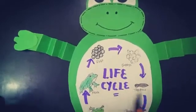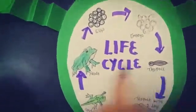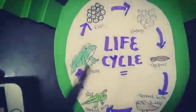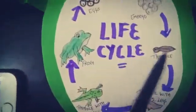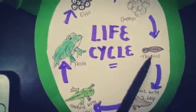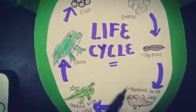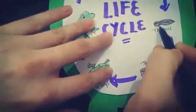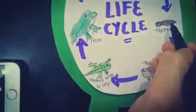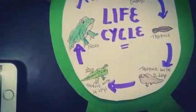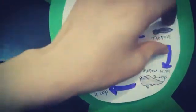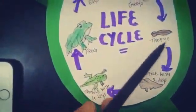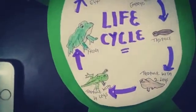The eggs hatch into a tadpole with gills and tails. This is what your embryo looks like. Eggs hatch into a tadpole, and a tadpole is known as a baby frog. Tadpoles have no lungs — they respire through gills, which are present over their body. They look more like a fish than a frog. At this initial stage, they look like a fish rather than a frog.